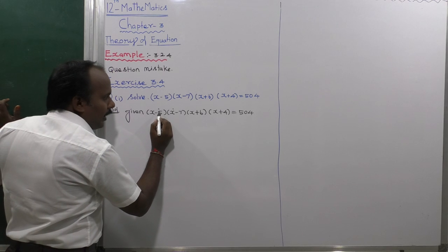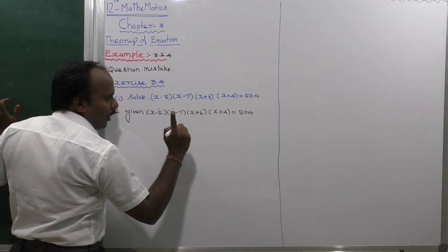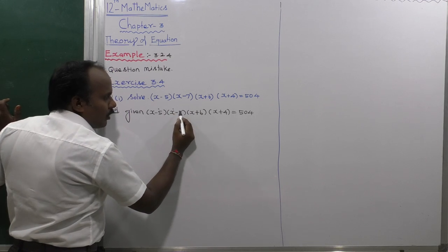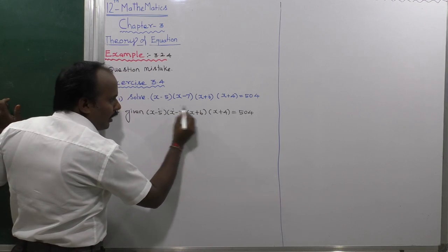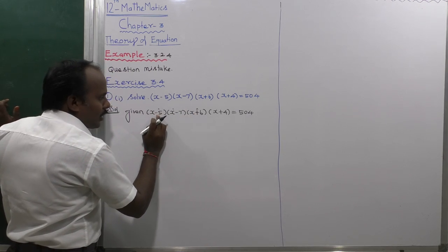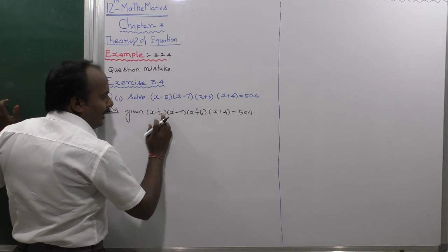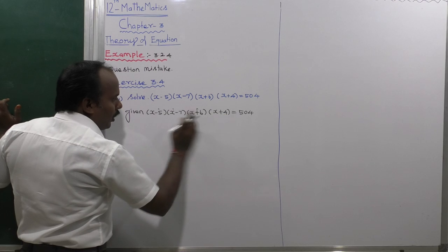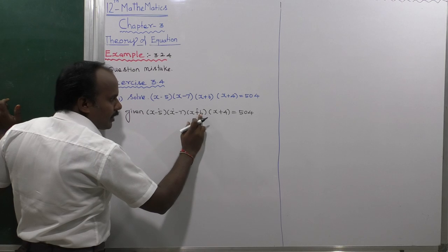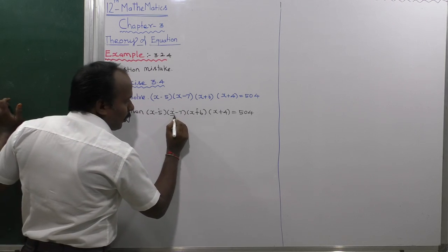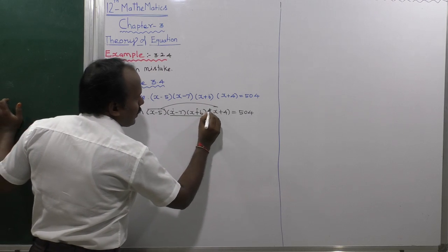Next, checking minus 5 and 6: that gives 1. And minus 7 and 4: that gives minus 3. Not eligible. But x minus 5 with x plus 4: minus 5 plus 4 equals minus 1. And x minus 7 with x plus 6: minus 7 plus 6 equals minus 1. Both give minus 1, so these two pairs are eligible for inside multiplication.